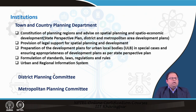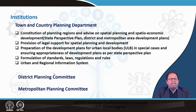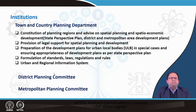When we talk about institutions, the first institution that plays a role in urban planning is of course the Town and Country Planning Department. This is a central government institution responsible for helping different urban local bodies create plans and helping in spatial planning — spatial economic development. They help in preparing the state perspective plan, district and metropolitan area development plans, and so on. They also provide legal support for spatial planning and development — whenever a plan is prepared and executed, it becomes a mandatory statutory document which has to be followed by everybody living in the urban area, and legal issues that crop up are supported by the Town and Country Planning Department.